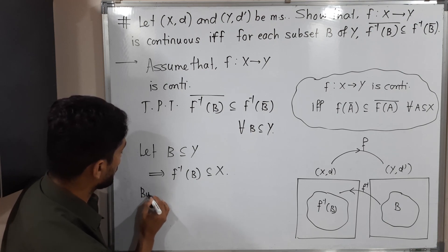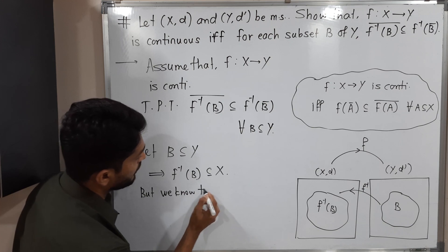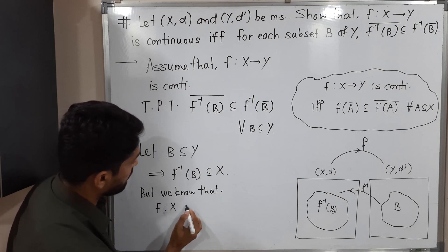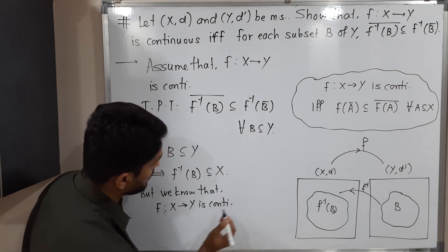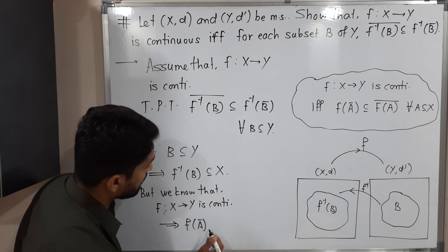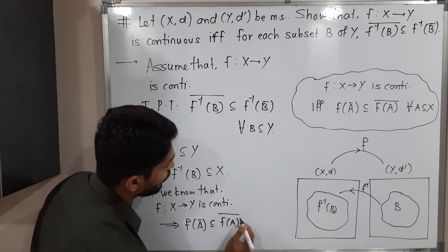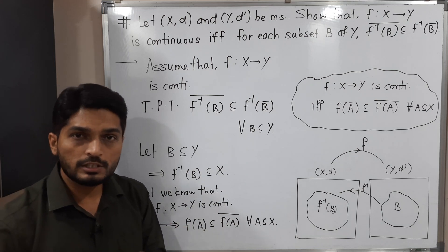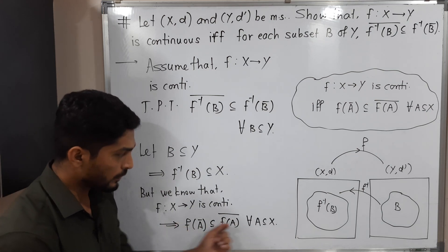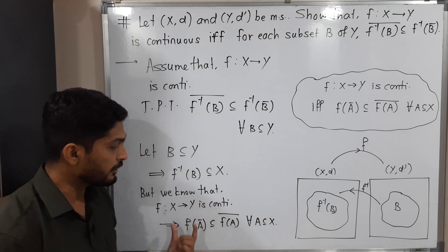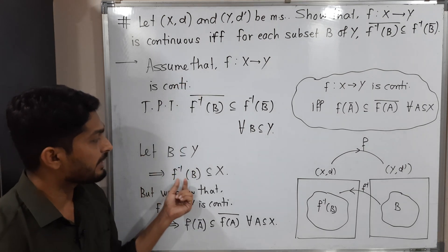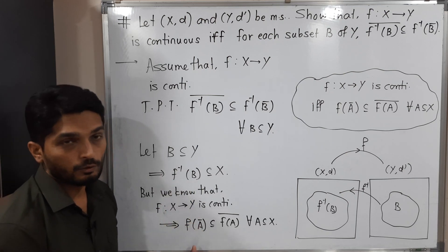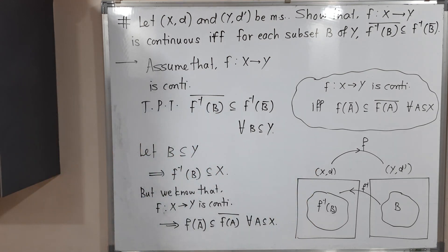We know that f from X to Y is continuous, which implies f(Ā) ⊆ f(A)̄ for all subsets A of X. Here we are using just one direction of the if-and-only-if, so we write 'implies'. Since f is continuous and f⁻¹(B) is our subset of X, we can apply this result by taking A = f⁻¹(B).